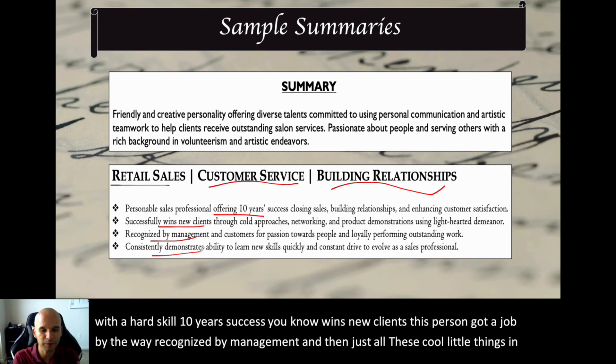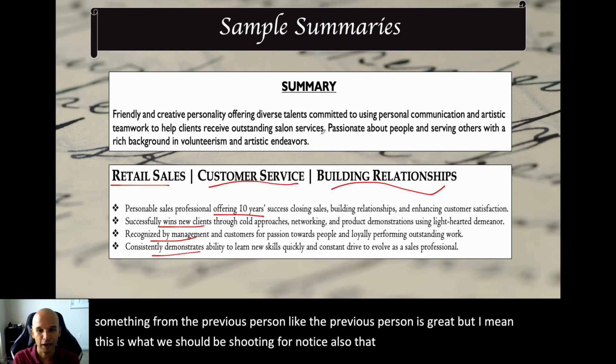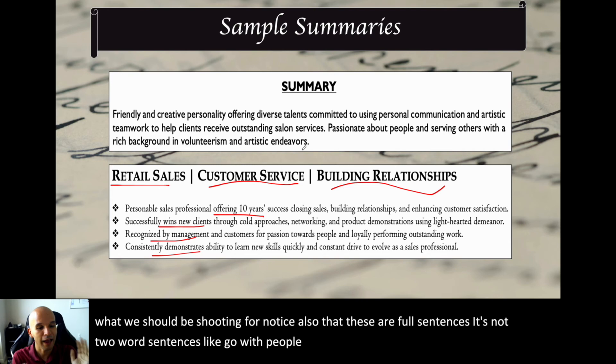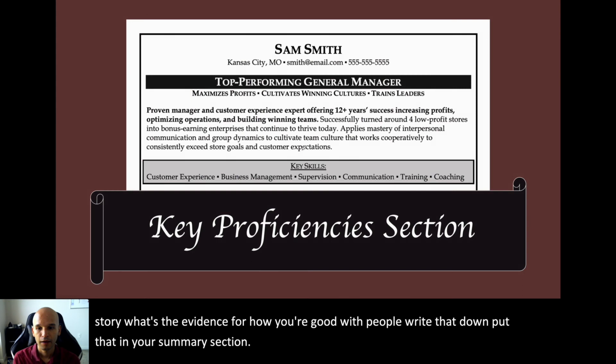Your summary should look something like these. Notice that these are full sentences — not two-word phrases like 'good with people.' Remember: headline plus story. If you're good with people, how or what? What's the evidence? Write that down and put it in your summary section. Your summary section shouldn't be more than a fourth of your resume because you want to leave room for work experience, education, and additional sections.